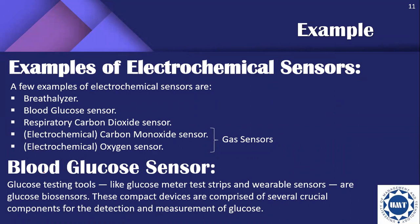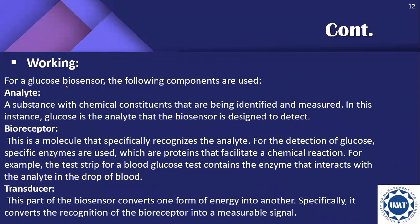The most important type is the blood glucose sensor. Glucose testing tools like glucose meters, test strips, and wearable sensors are glucose biosensors. These compact devices are comprised of several components. For a glucose biosensor, the components used are: analyte — a substance with chemical constituents that are being identified and measured; and bioreceptor — a molecule that specifically recognizes the analyte. For glucose detection, specific enzymes are used, which are proteins.